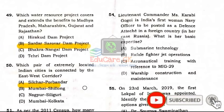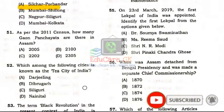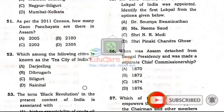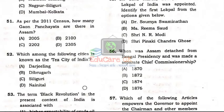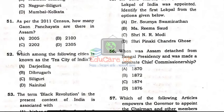Question Number 51: As per the 2011 census, how many Gaon Panchayats are there in Assam? Option C: Two thousand two hundred and fifty-two (2252).